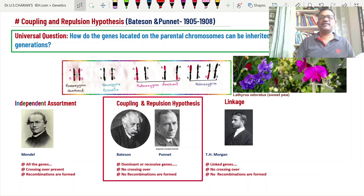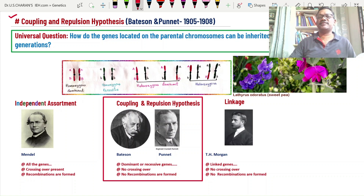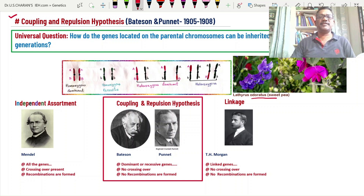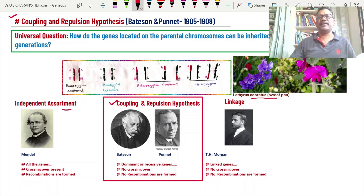An important topic in genetics is the coupling and repulsion hypothesis proposed by Bateson and Punnett from their fascinating experiment on Lathyrus odoratus, the sweet pea plant. This is different from the Pisum sativum used by Mendel. This is one type of inheritance pattern where genes located on parental chromosomes can be inherited to the next generation by coupling and repulsion.